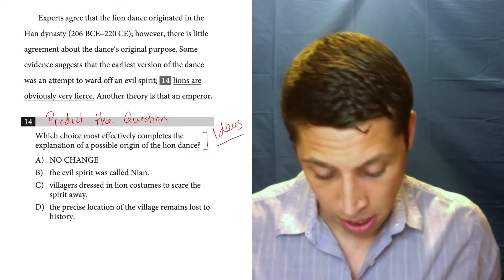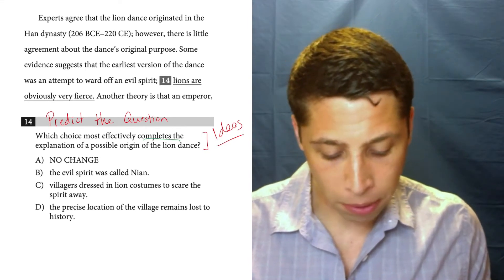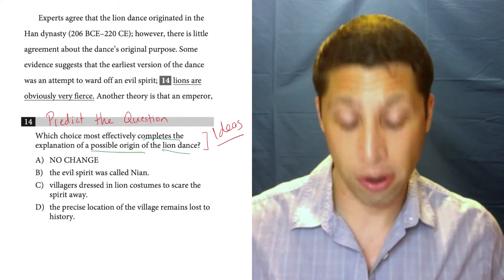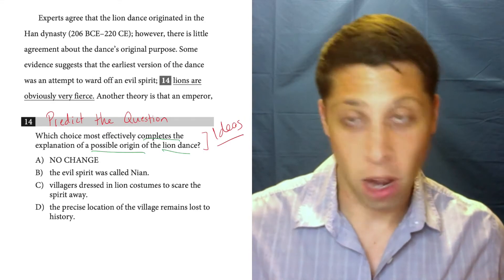In this case, we need to figure out what is the goal. Which choice most effectively completes the explanation of a possible origin of the lion dance? So if we start the paragraph, we can see they're talking about the lion dance, right?